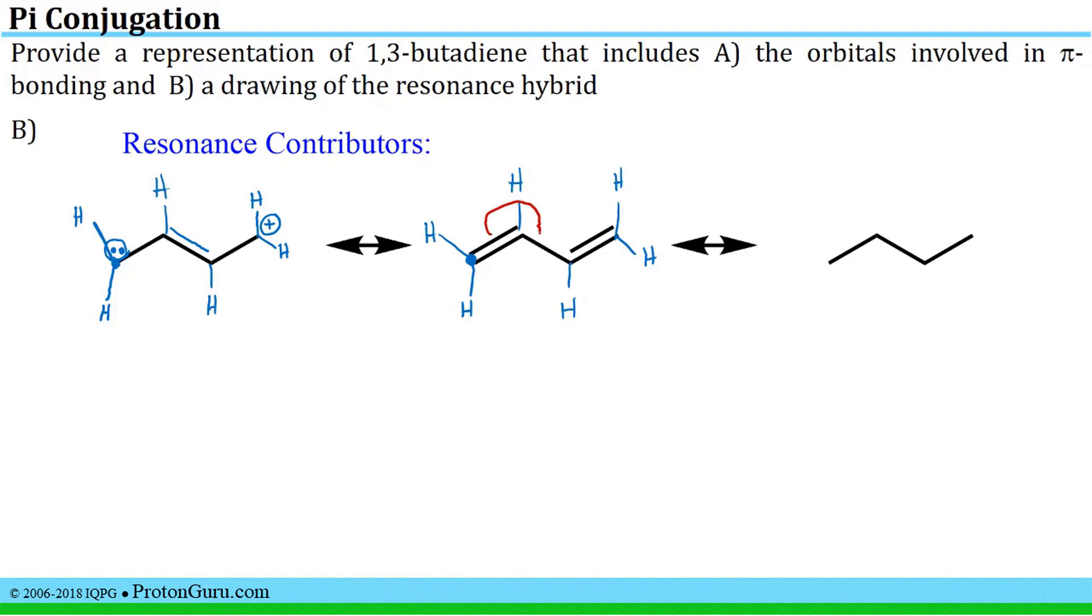Now we can just as easily draw another resonance contributor where we move the electrons in the opposite direction towards the right instead of towards the left. If we do that we will produce a pi bond between these two carbons, and we will leave a positive charge on this carbon and pushing a lone pair onto this carbon will leave a negative charge there.